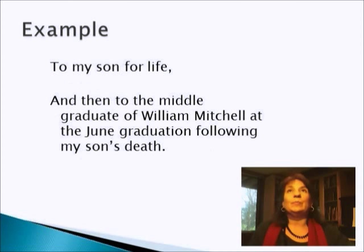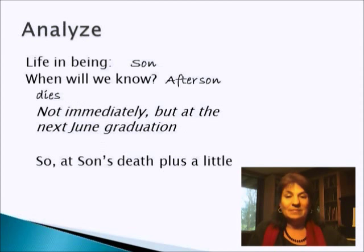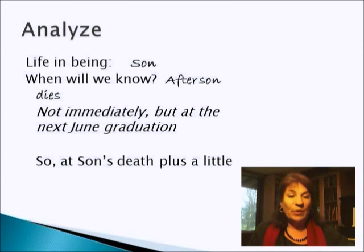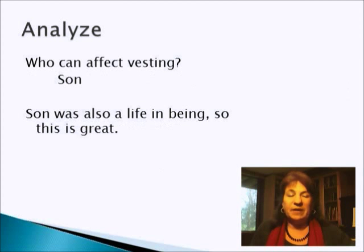Here's an example. To my son for life, and then to the middle graduate of William Mitchell at the June graduation following my son's death. Who's a life in being here? Well, the son — this is a person that we can identify who's mentioned. When will we know who to write the check to? It's going to be after son dies, but not immediately — it'll be at that next June graduation. So it's at son's death plus a little. But we're focusing on the life in being, we're focusing on son. So who can affect vesting here? Son. Son is also a life in being. So that's good news.